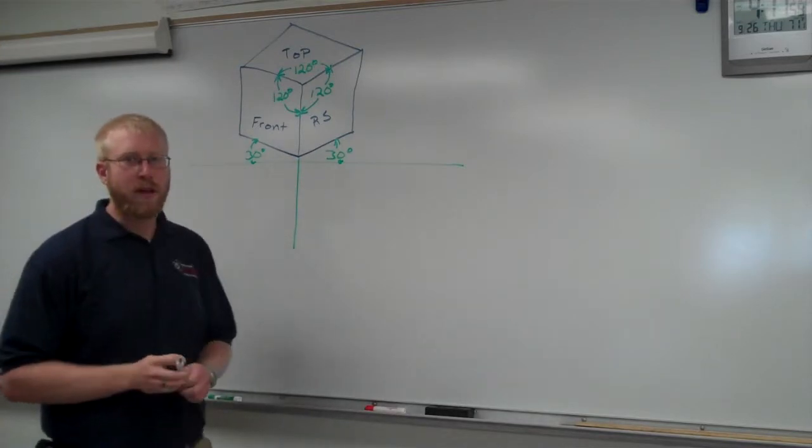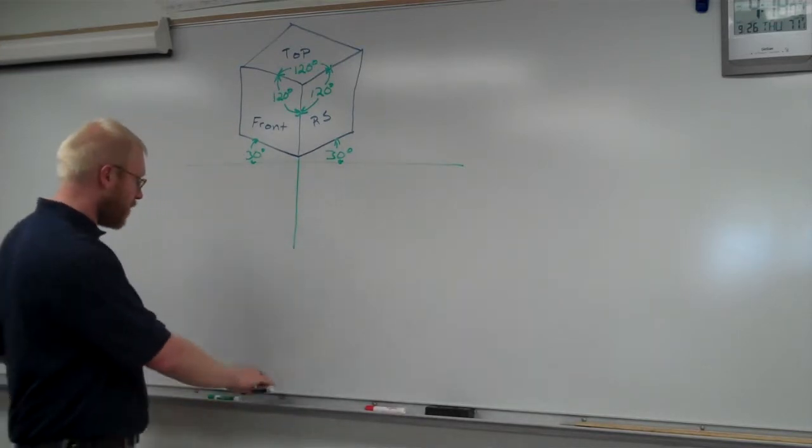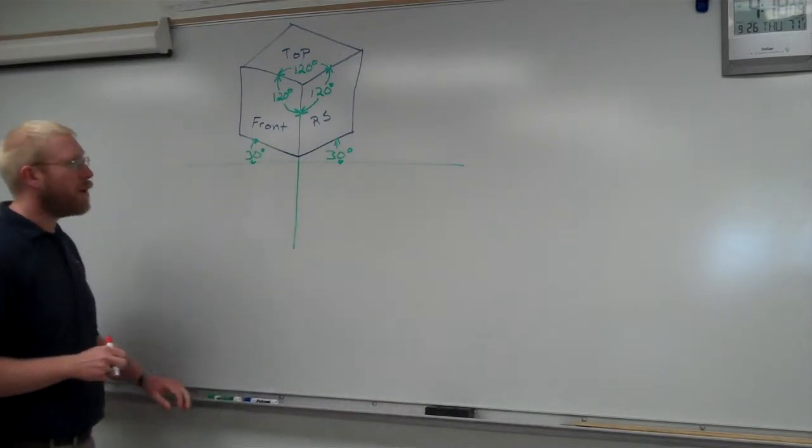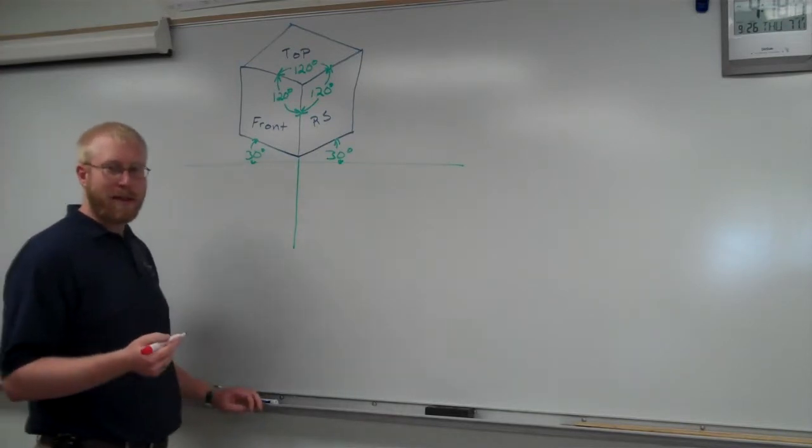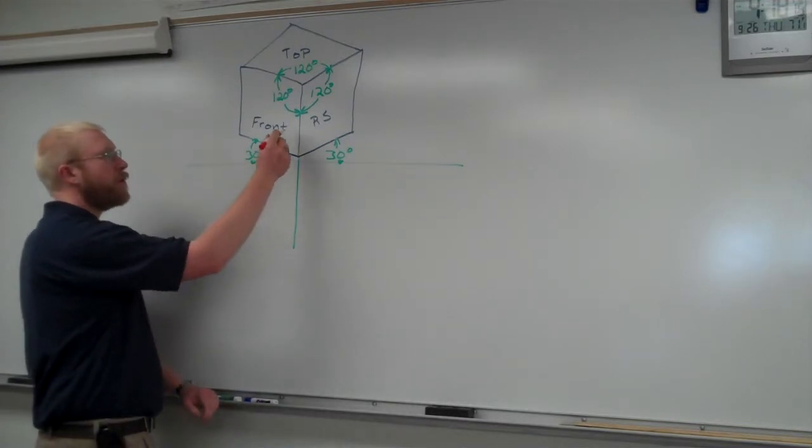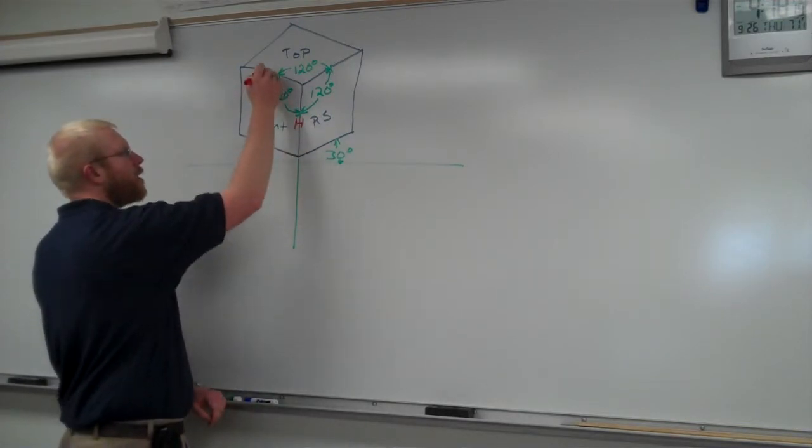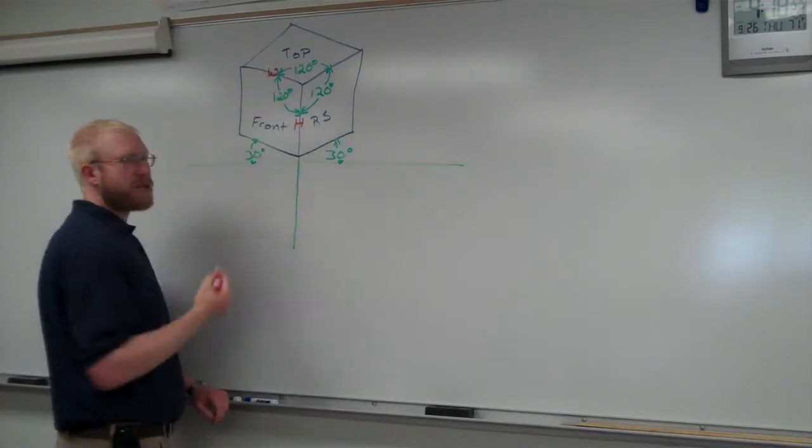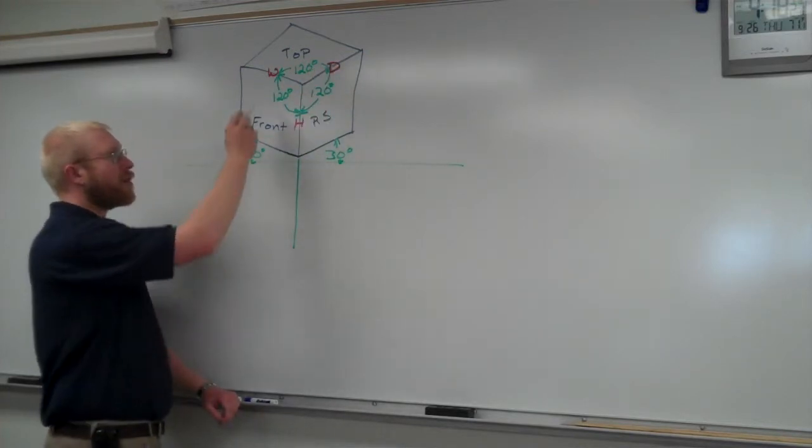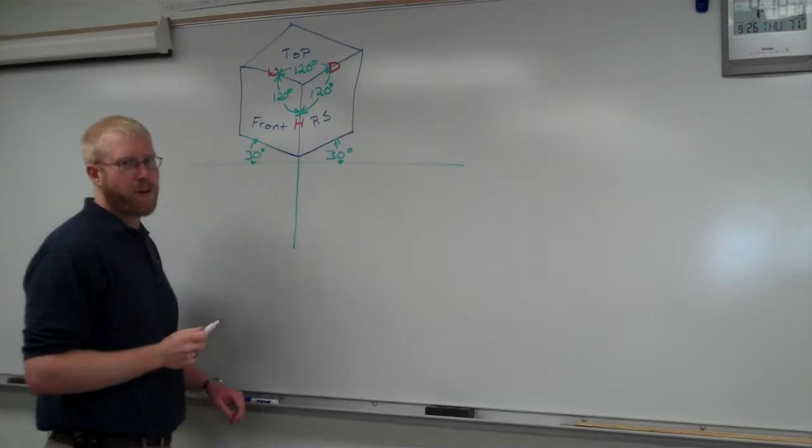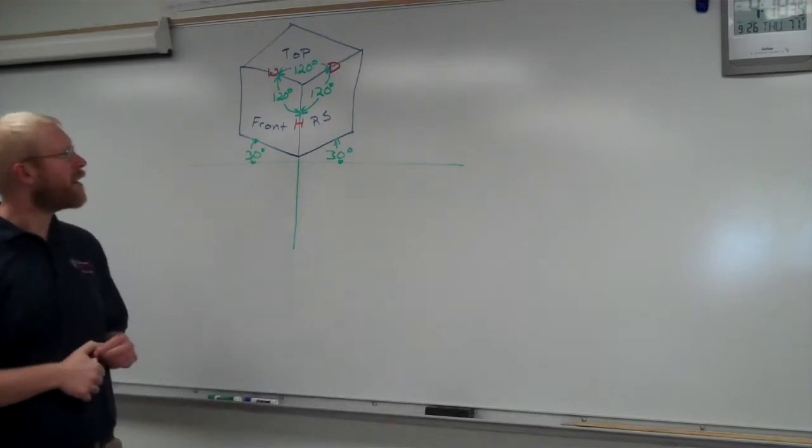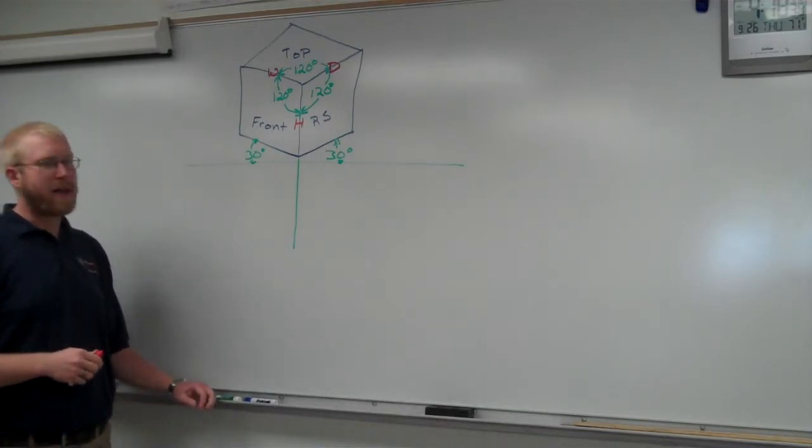We have three common dimensions that we use in different types of drawings. We have height, width, and depth, hence three-dimensional objects. In any one view, you're going to have two dimensions. In the front view, we would have our height and our width. In our right side view, it shares the height with our front view and we also have our depth. Our top view shares our width and our depth with our front view and our right side view.